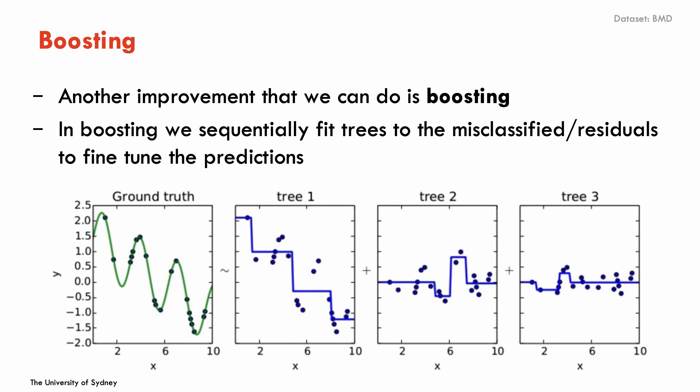Boosting can be applied to trees, but can also be applied to any other algorithm for prediction. So the idea is that we can have a method that makes predictions. We get predictions and those predictions, some of them are not going to be correct. So you're going to have residuals or misclassifications. And then I can fit or can use another tree to try to fit those residuals or those misclassifications. And then again, I'll have some other misclassifications and then add another tree and another tree and another tree to the residuals, the misclassifications at the end of each tree.